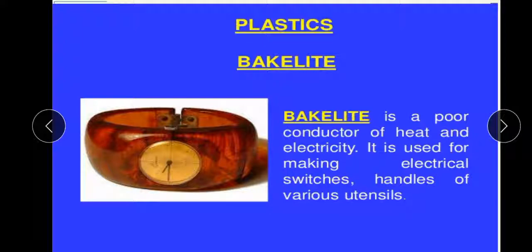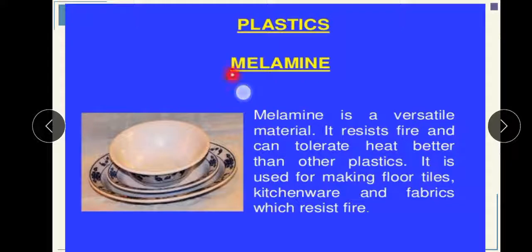Bakelite is a poor conductor of heat and electricity. Therefore, it is used for making electrical switches and handles of various utensils — like the handle of your pan or cooker. Melamine is a versatile material. It resists fire and can tolerate heat better than other plastics. It is used for making floor tiles, kitchenware, and fire-resistant fabric.